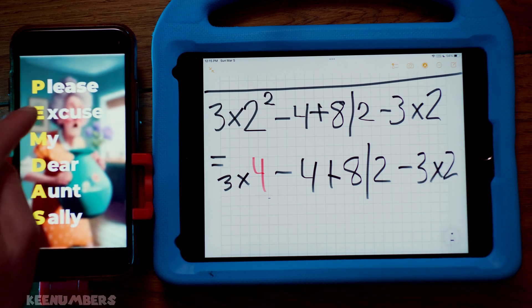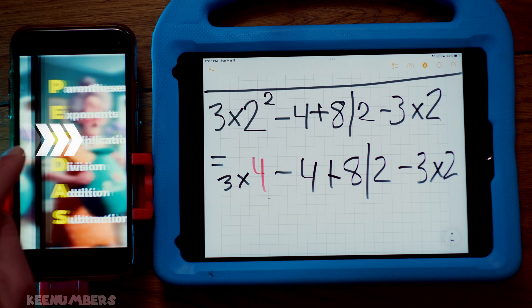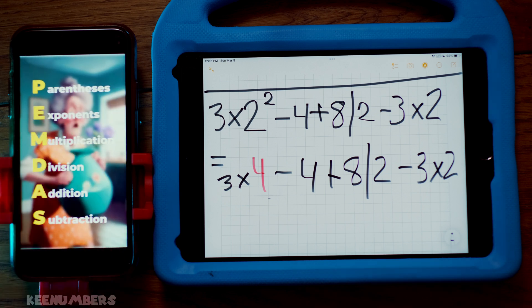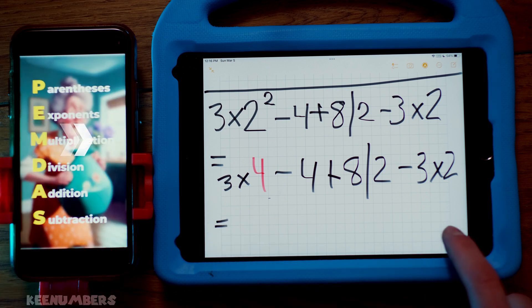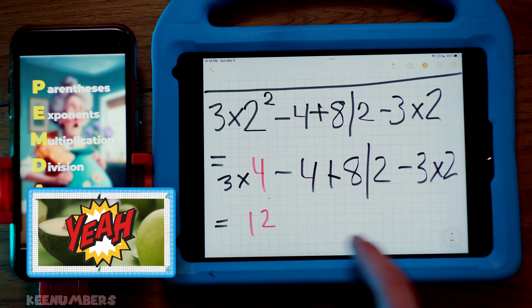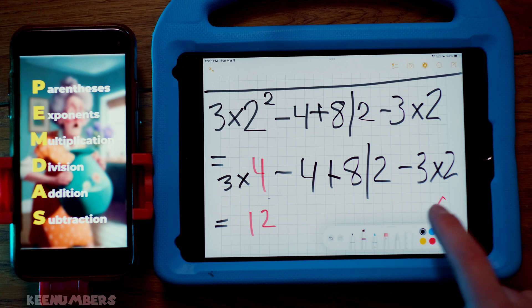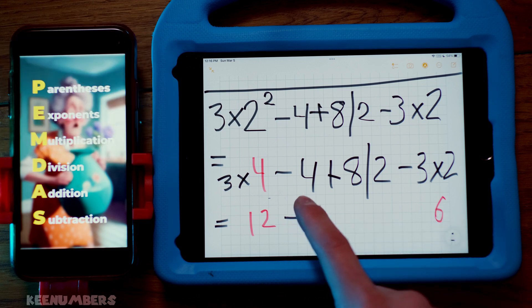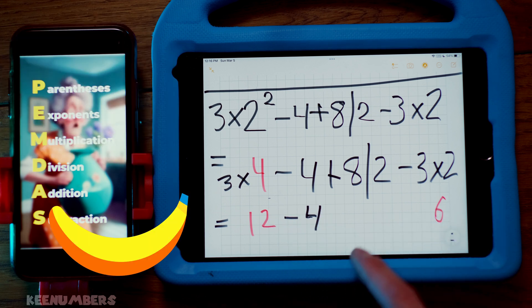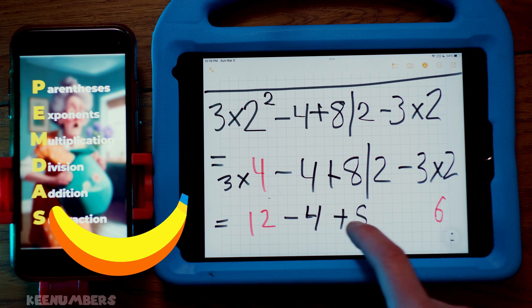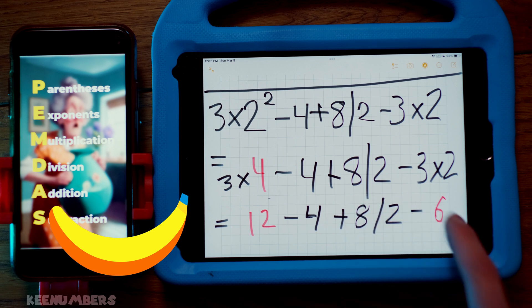Next, after you excuse your dear Aunt Sally, you're going to multiply. In other words, you have three fours, also known as twelve, and then you have three twos, also known as six. You're going to continue with your order of operations like so. Minus the four, plus the eight, divide by the two, and subtract that six there.